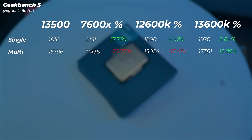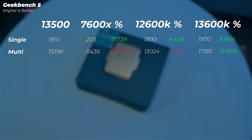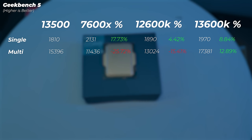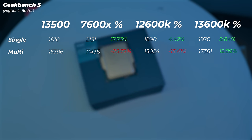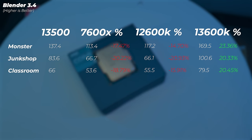In Geekbench 5, the 7600X is 17% faster in single-core but about 25% slower in multi-core. The 12600K is 4.4% faster in single-core and about 15% slower in multi-core. The 13600K is about 8% and 12% faster in single and multi-core scores respectively.